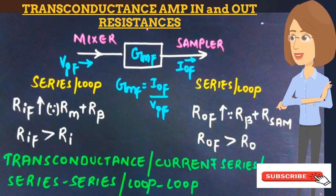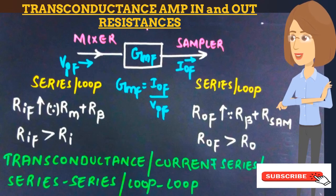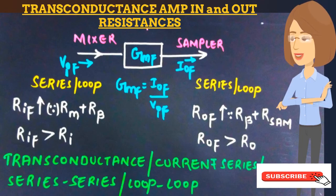The transconductance amplifier, also called the current series or series-series amplifier, has current as its output signal and voltage as its input signal. Since we have a series connection between the sampler and feedback network at the output, and again a series connection between the mixer and feedback network at the input, both the input and output resistances increase — because at the output the sampler and feedback network resistances add in series, and at the input the mixer and feedback network resistances also add in series.